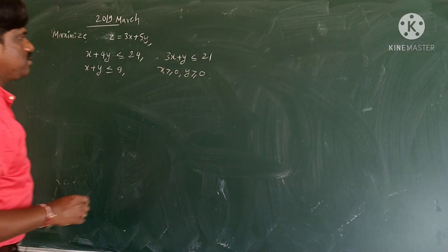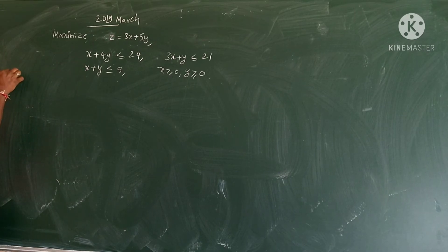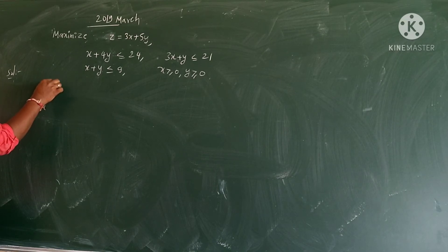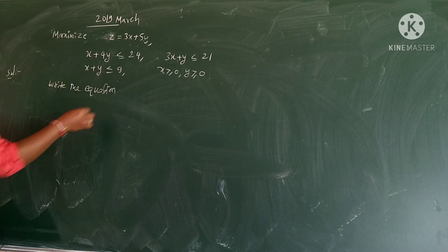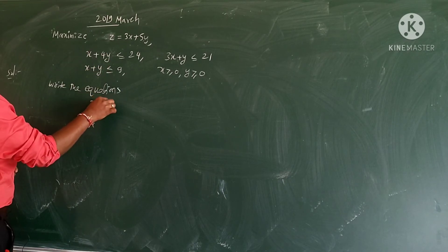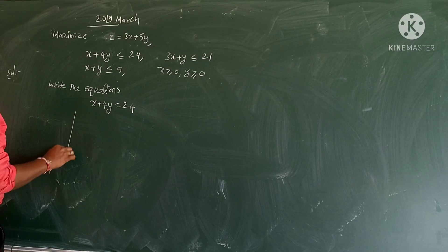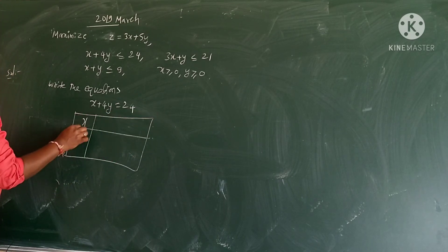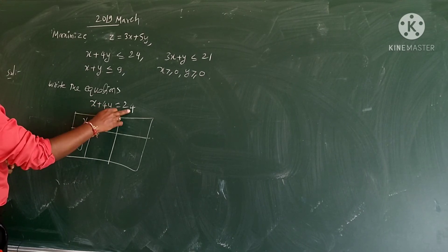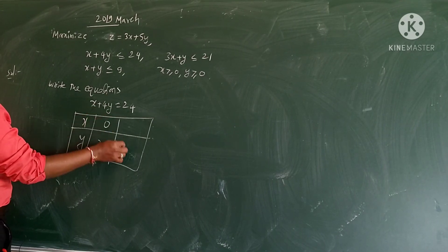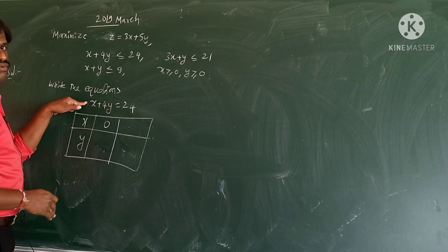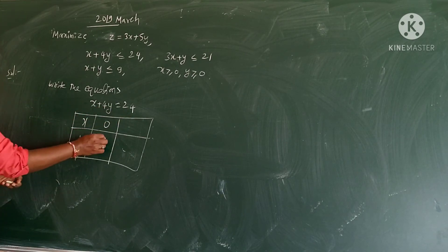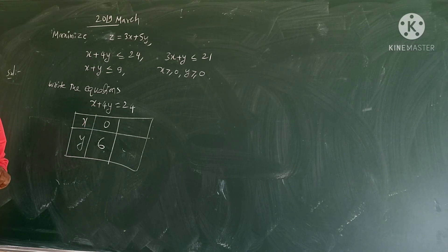Whenever such questions are given, first write the equations of the given inequalities - convert each inequality to an equation. The equations here are: x + 4y = 24. Make a table with x and y values. If x = 0, then 4y = 24, so y = 6. You can also take y = 0, but 24 is a large number to plot.